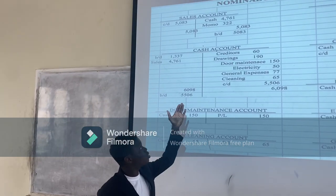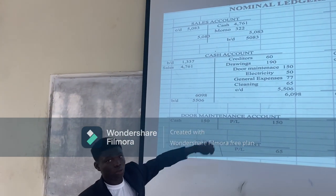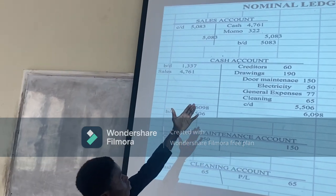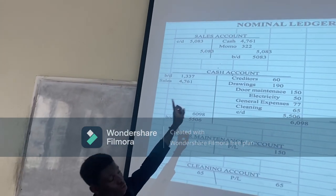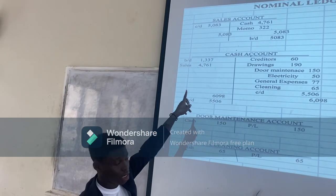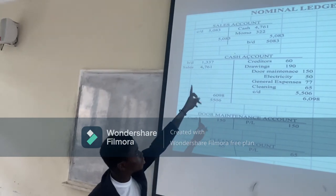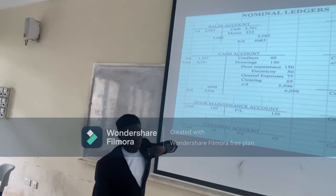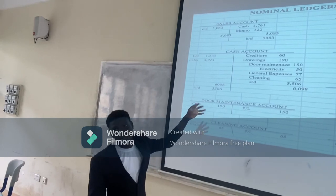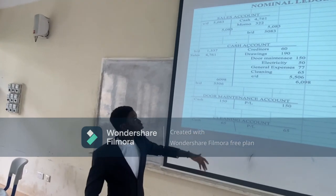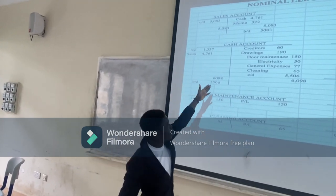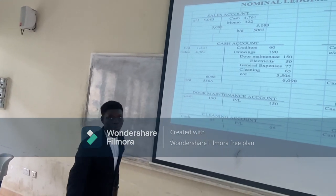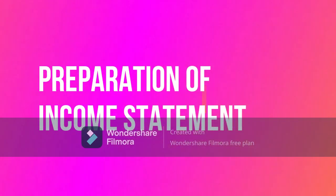Then you bring it to the debit side. In Moscow Phones, you also accepted MUMU. So you paid MUMU sales of $322. So you credited the sales account with MUMU as $322. Then you go to the MUMU account and debit the MUMU account. After that, you balance your cash account.